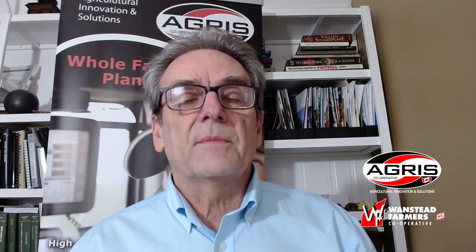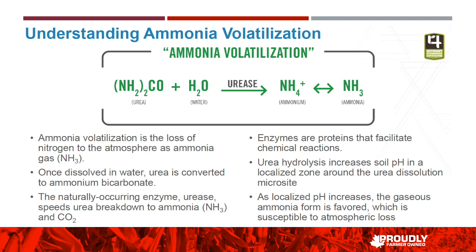To understand ammonia loss: when urea is left on the surface, the urease enzyme — which is naturally occurring in soil, especially on crop residues — starts to break down urea. At the site of the granule, the pH rises rapidly, and as pH rises it favors the loss of ammonia. The higher the pH, the more ammonia. So it starts to feed on itself and losses can be quite dramatic.